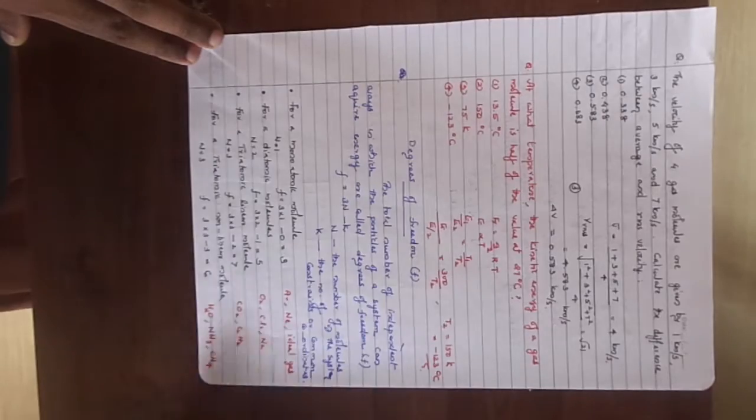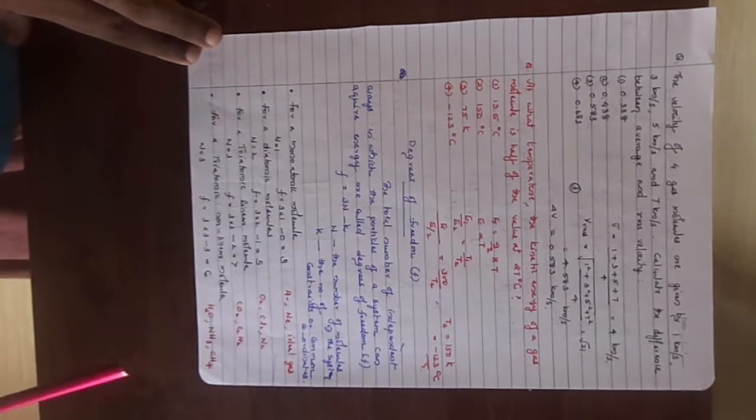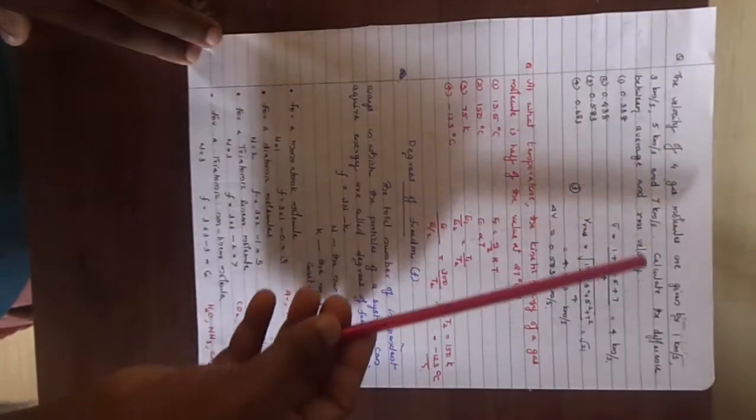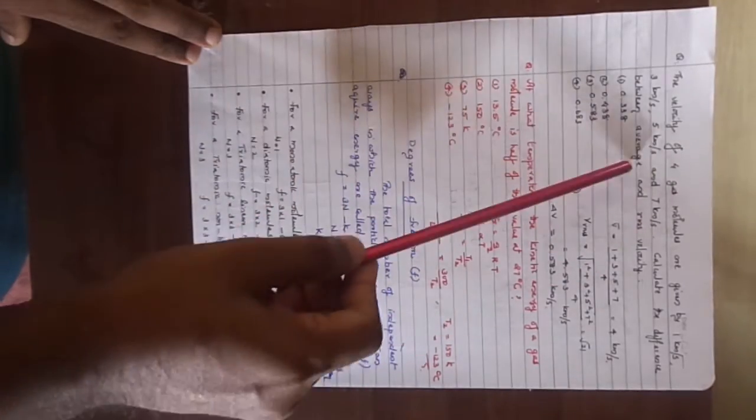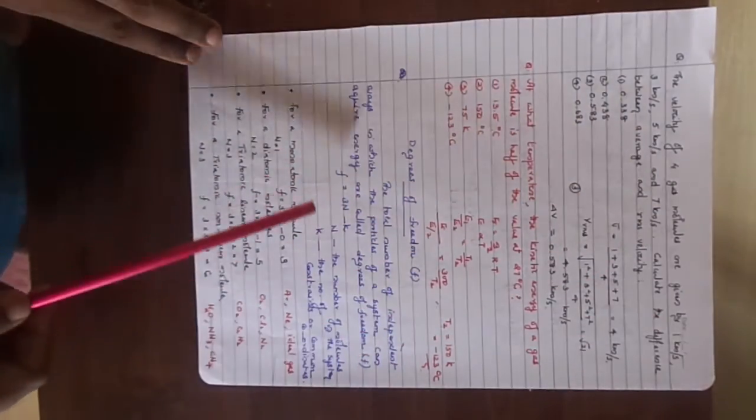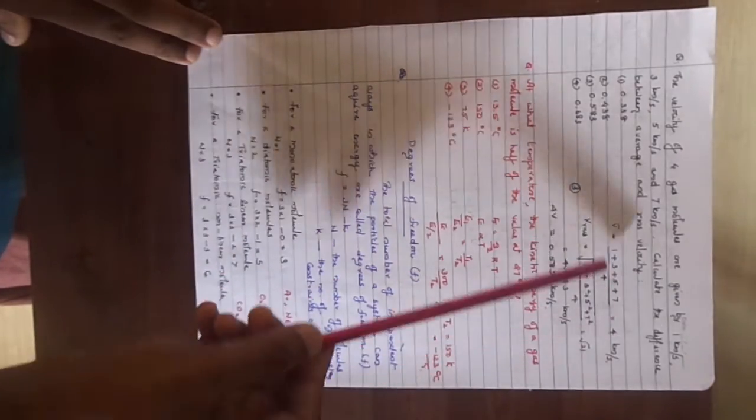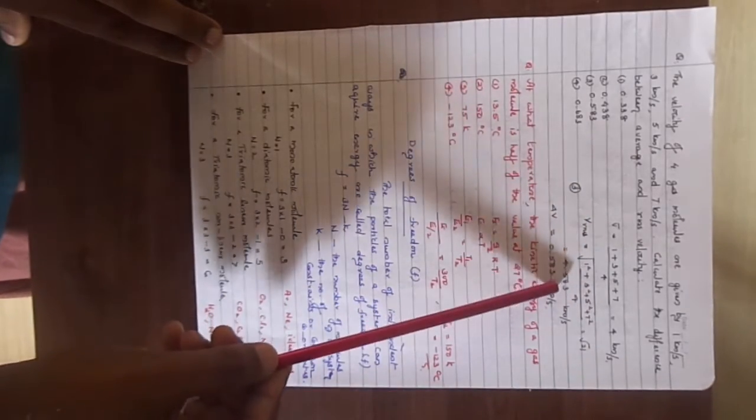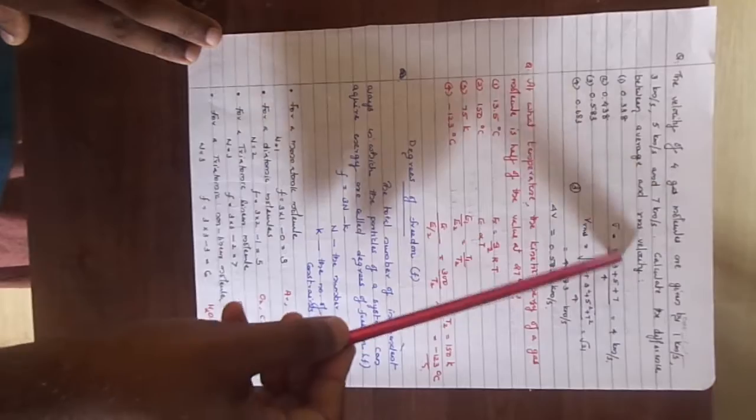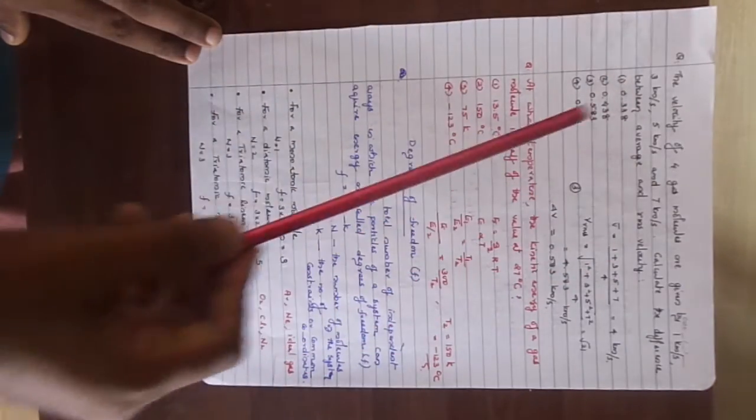Look, another one. The velocity of 4 gas molecules are given by 1, 3, 5, and 7 kilometer per second. Calculate the difference between average and the RMS. It is simple formulas. You take the average value, you get 4. The RMS value, you get root 21 as 4.583. So you just take the difference, you get the answer as 0.583.